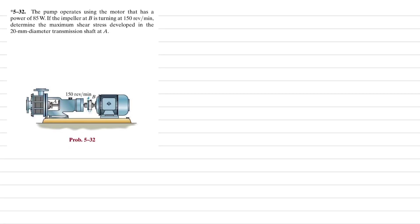Welcome back to Problem 5-32. The problem states that the pump operates using a motor that has a power of 85 watts. If the impeller at B is turning at 150 revolutions per minute, determine the maximum shear stress developed in the 20 millimeter diameter transmission shaft at A.